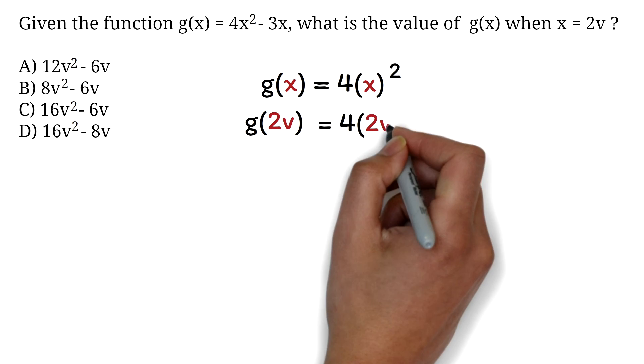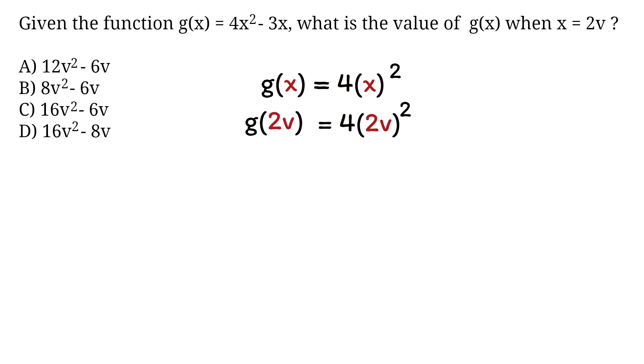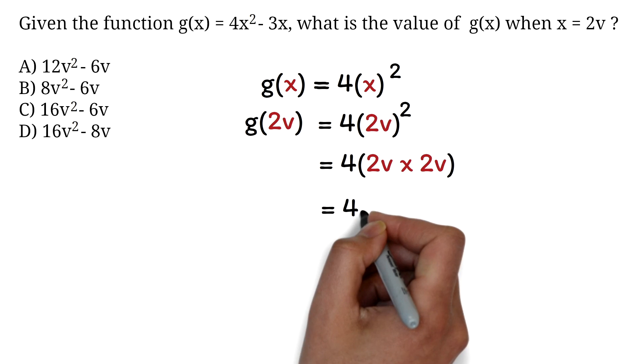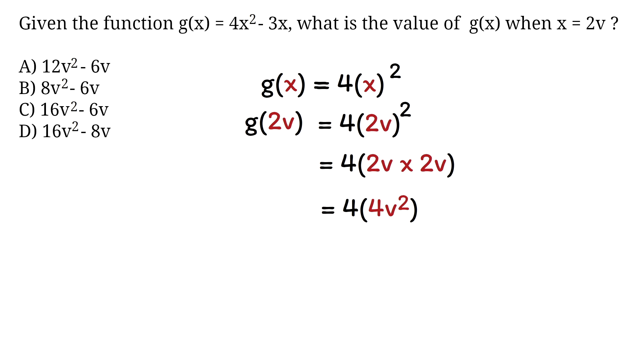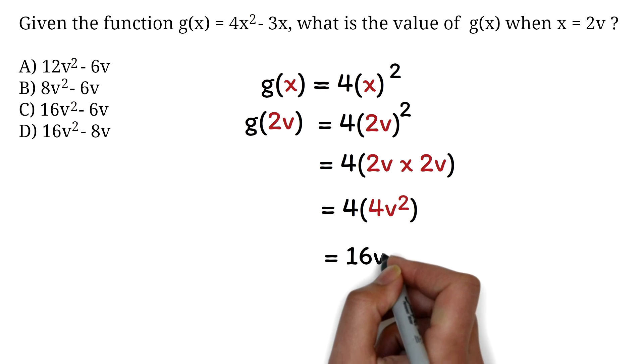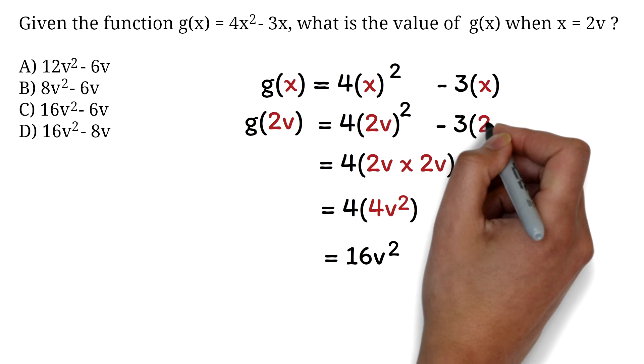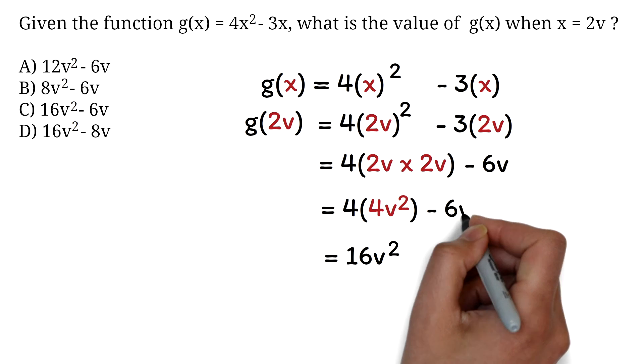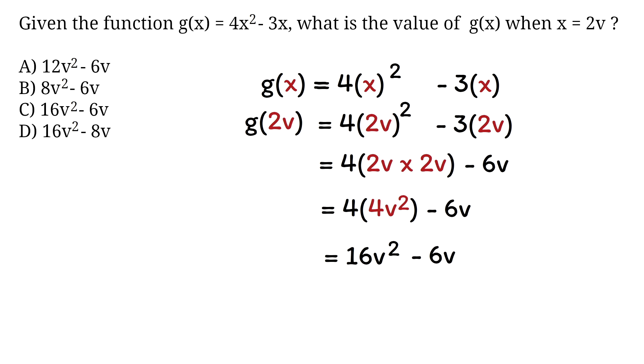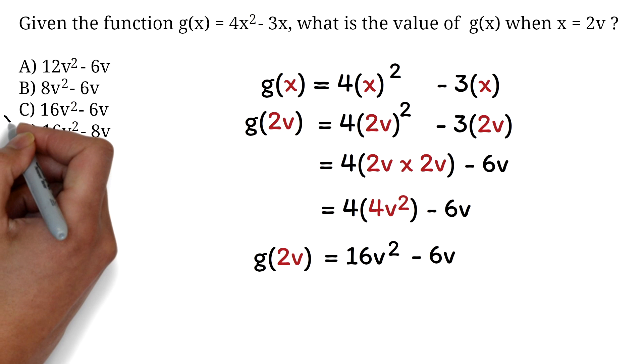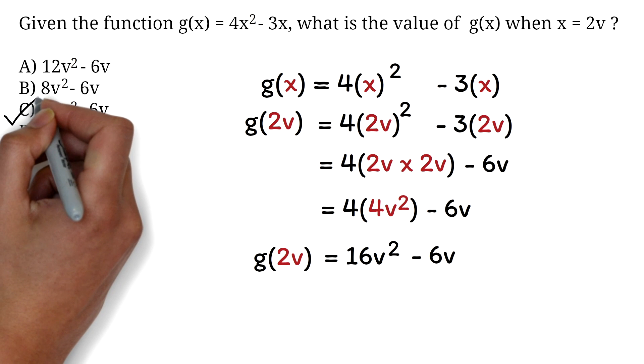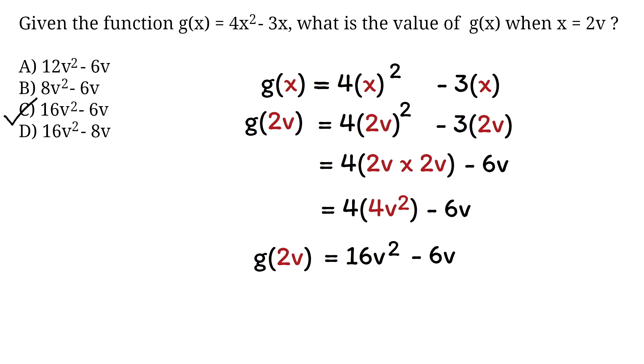Starting with the term 4x², when we plug in 2v for x, x² becomes 2v times 2v, which is 4v², multiplying that by 4 gives us 16v². Next, for the term -3x, when we substitute 2v for x, we get -3 times 2v, which simplifies to -6v. Combining these results, g(2v) is 16v² - 6v. Therefore, the correct answer is C, 16v² - 6v.